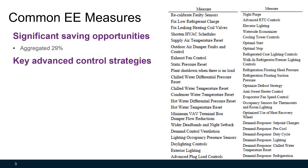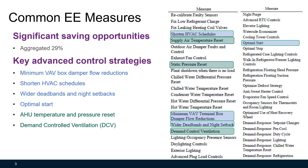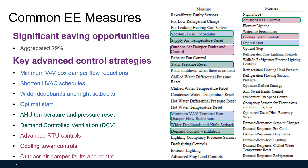Here's the list of advanced control strategies and common energy efficiency measures. 29% of savings can be achieved by these advanced control strategies. One group includes minimum VAV box damper flow reductions, shortened HVAC schedules, wider dead bands and night setbacks, and optimal start. Another group includes AHU temperature and pressure reset and demand controlled ventilation. A third group includes advanced rooftop unit controls, cooling tower controls, and outdoor air damper faults and control.